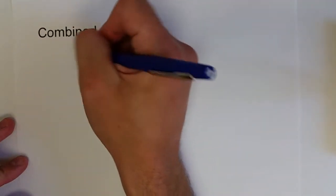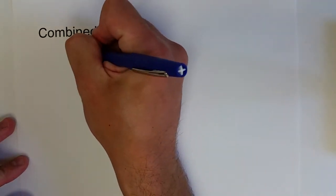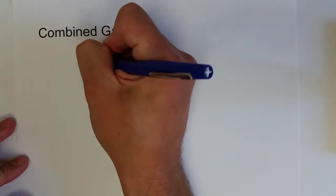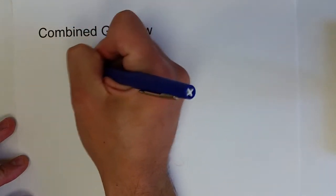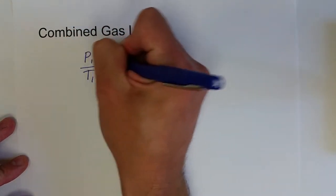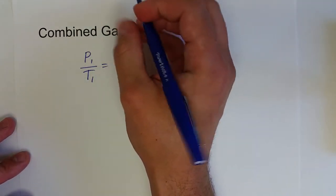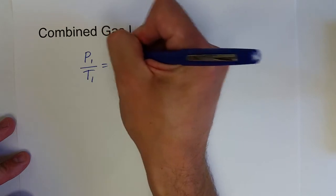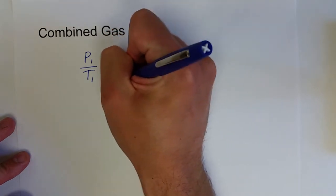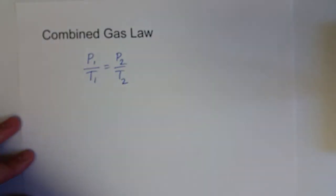All right, so what we had before, we had P1 over T1 equals some constant, or equals P2 over T2, rather, for Gay-Lussac's law.